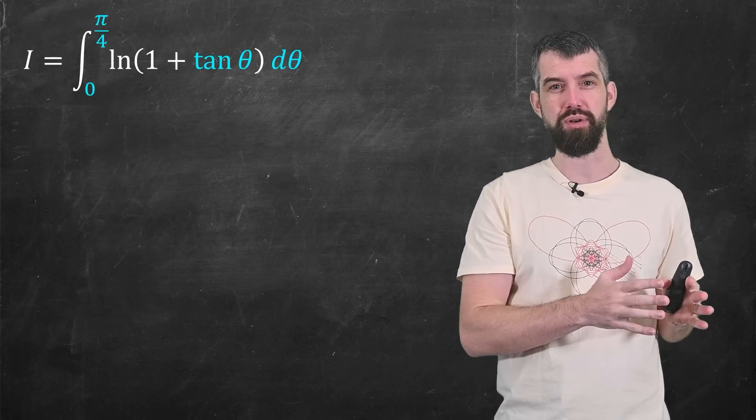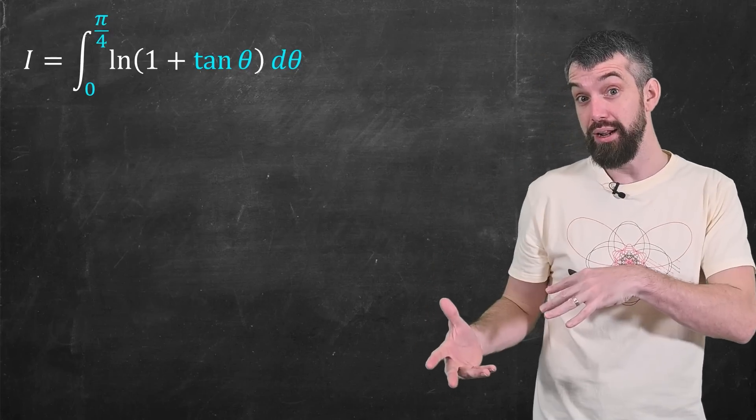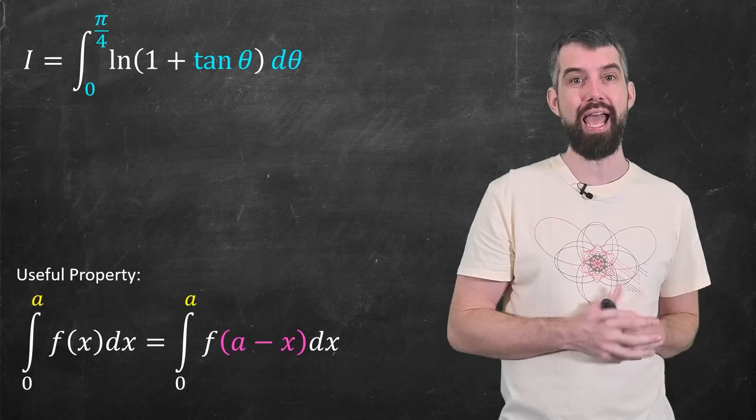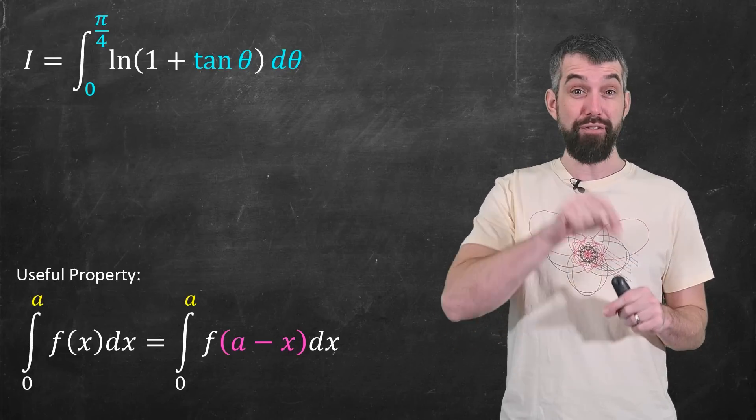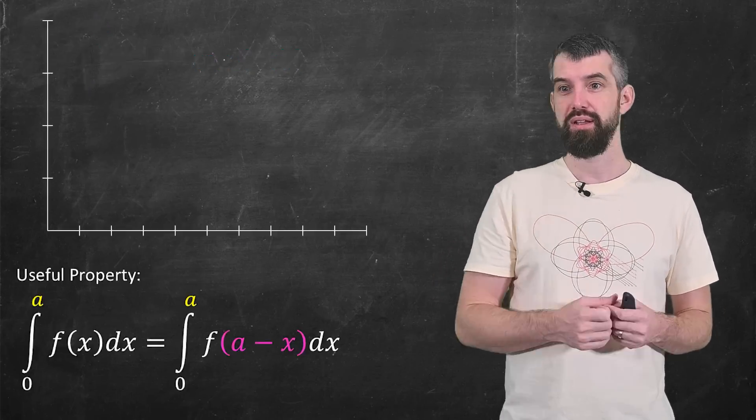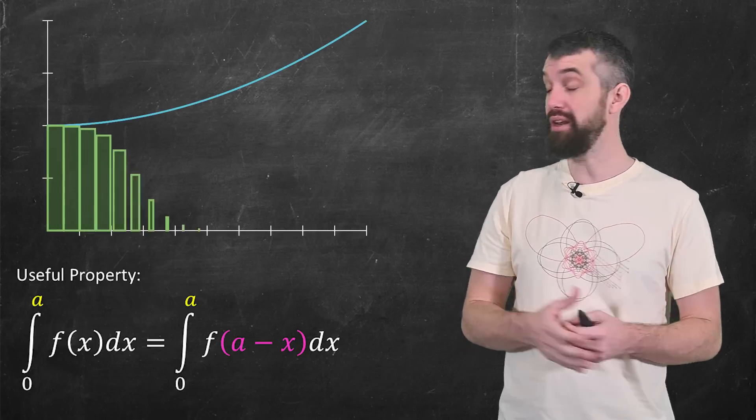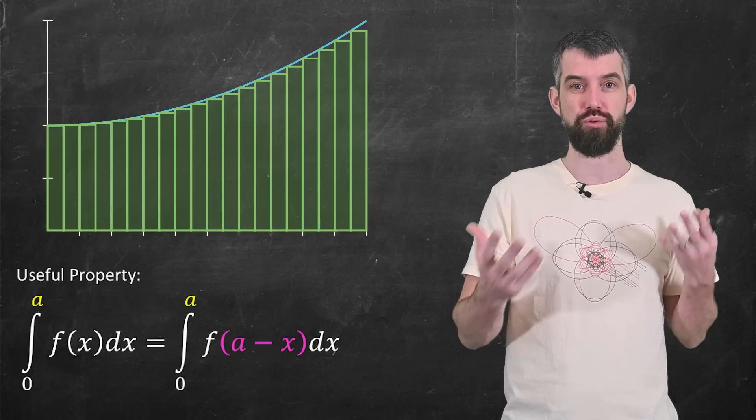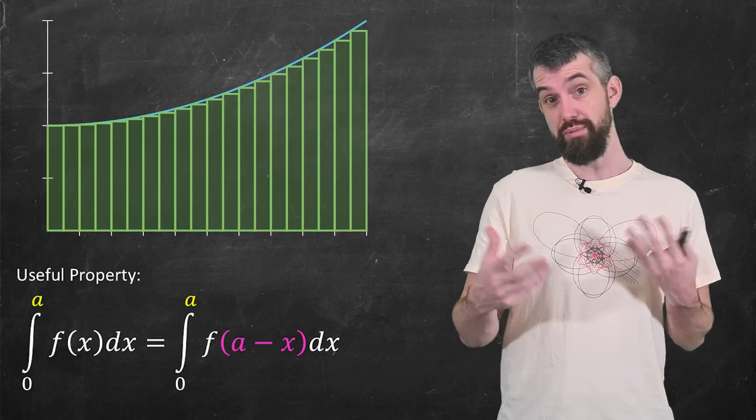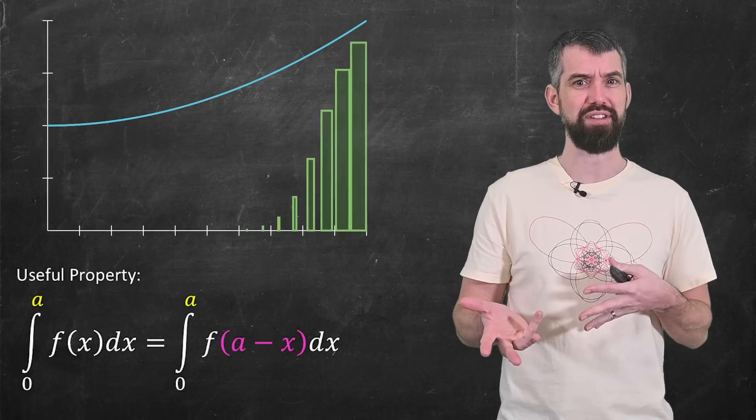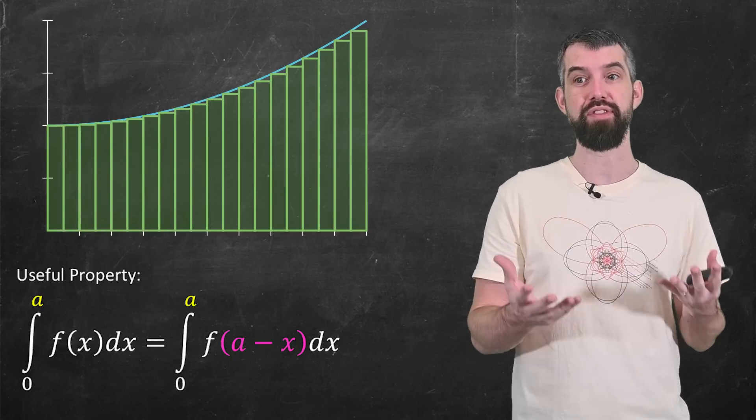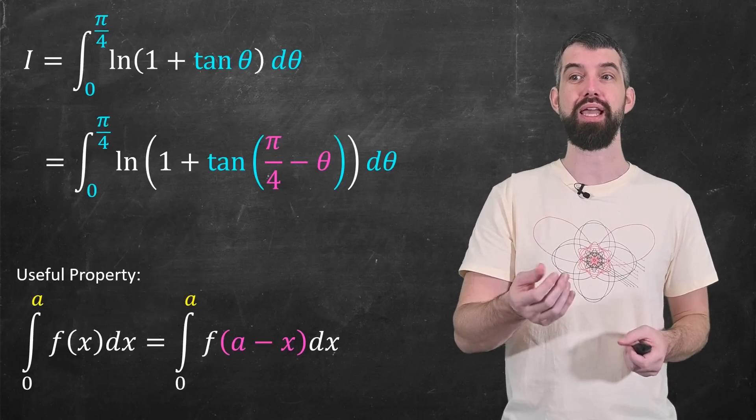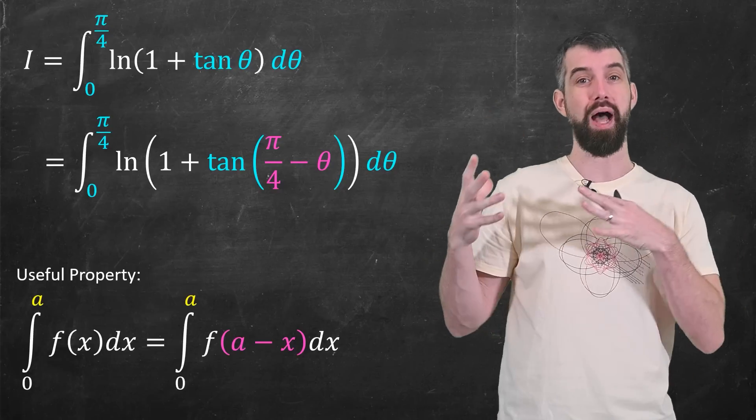So a great trick when doing integrals is to try the integral from the other side. What I mean by that is the following property. It says if you're integrating from 0 up to a, you could always integrate, instead of f of x, f of a minus x. Visually, the reason for this property is, you know how an integral is like an area under a curve? You could think of adding up a bunch of rectangles from left to right as an approximation. But if you added the areas of the rectangles from right to left instead, that'd give you the same area.